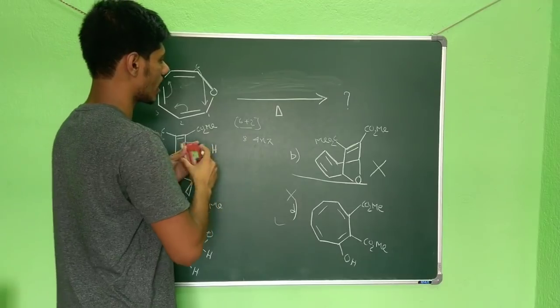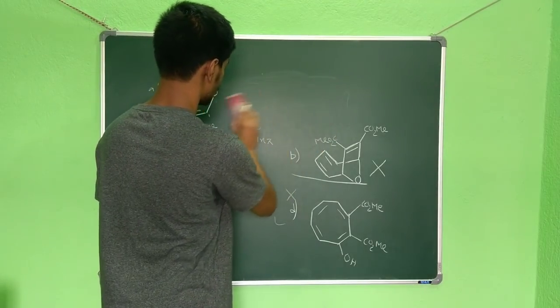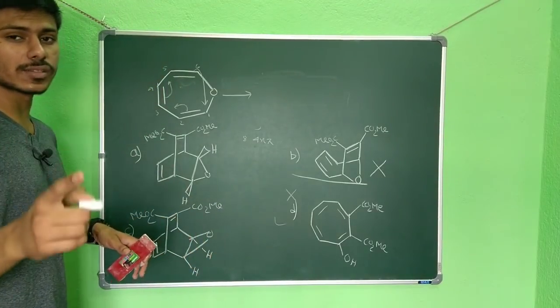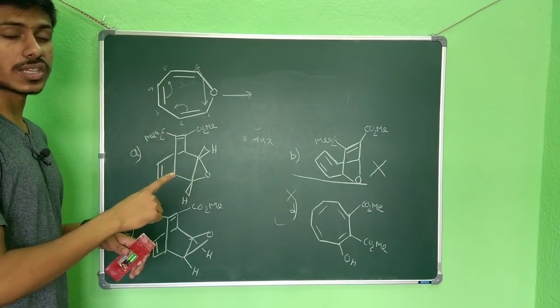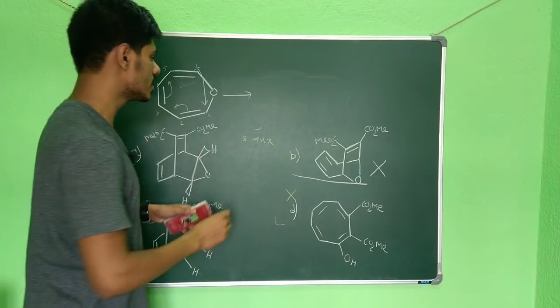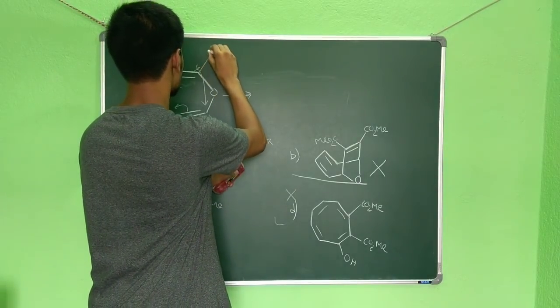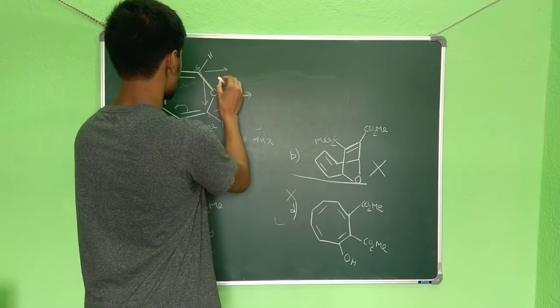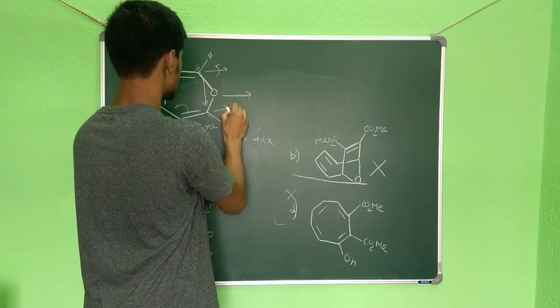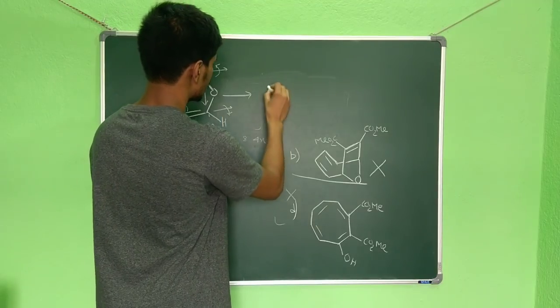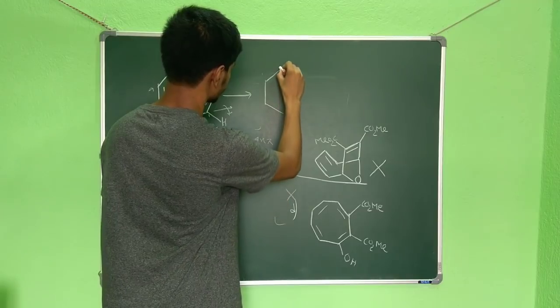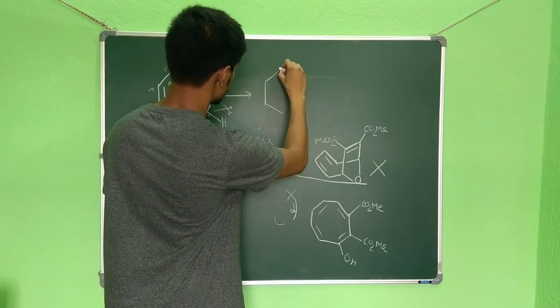Six-membered electrocyclic ring closing in the presence of heat will be disrotatory. It is 6 pi electron, so it will be disrotatory. If here you have one hydrogen, here you have one hydrogen, and if it is disrotation, so if both hydrogens go in this direction what you will get? Basically you will get the two hydrogens in the same side.